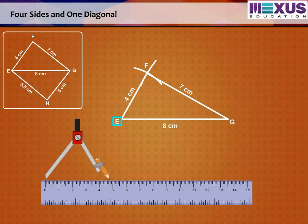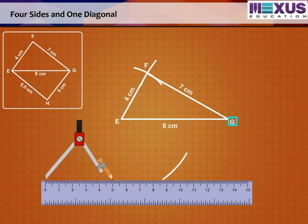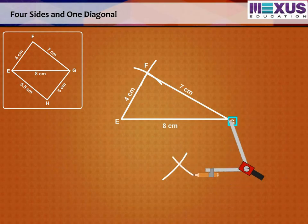So, with E as center, draw an arc of radius 5.5 cm, and G as center, draw an arc of radius 5 cm, such that they intersect at a point. Step 3.